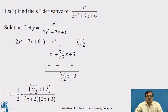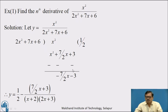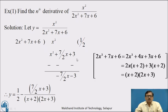We are dividing x² by 2x² plus 7x plus 6. To get the coefficient of x² equal to 1, we multiply 2x² plus 7x plus 6 by 1/2, giving x² plus 7/2 x plus 3. Subtracting, x² cancels, leaving minus 7/2 x minus 3. You know how to divide one polynomial by another.